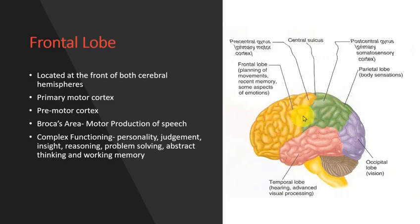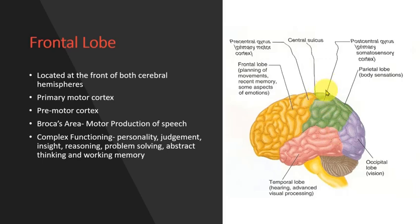The frontal lobe is located in the front of both cerebral hemispheres and is the largest lobe of the brain. The primary motor cortex, which is very important in BCI, represents a particular area of body — for example, the middle area of the cortex controls the legs, the lateral area is for muscles of the face, and the largest area represented is the arm and hands, located between both of these areas. The primary motor cortex is located on the frontal lobe.